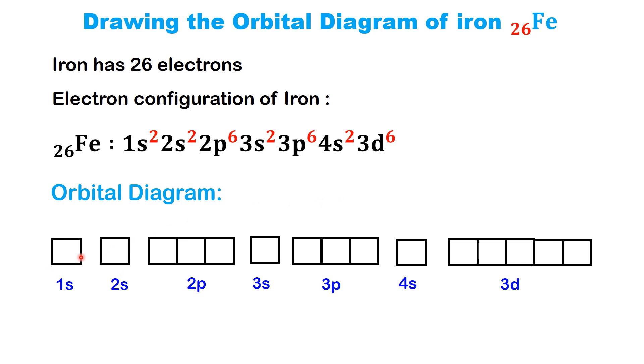The 1s, 2s, 3s, and 4s orbitals are represented by single boxes. The 2p and 3p orbitals are represented by three boxes each, as each p sublevel has three orbitals. The 3d orbital is represented by five boxes since the d sublevel has five orbitals.